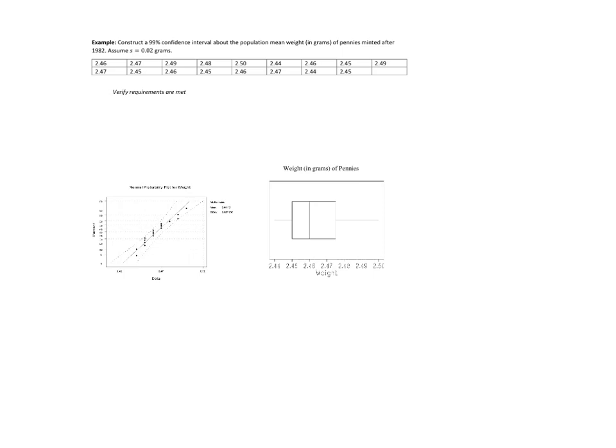So this example is a little bit different because in the previous one we were given statistics. We were told what x bar was, we were told what s is. And now we have raw data. So let's see how that's going to change everything. We're going to construct a 99% confidence interval about the population mean weight in grams of pennies minted after 1982. And then we're going to assume s equals 0.02 grams, which is helpful if you're doing it by hand.